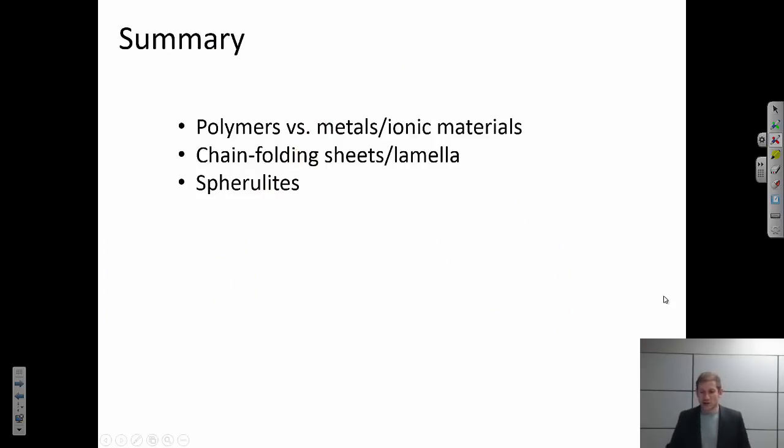Okay, finally a summary. So we talked about crystallinity in polymers, how that's different from metals and ionic materials. We talked about this chain folding sheet model, what are lamella, and finally what are spherulites.